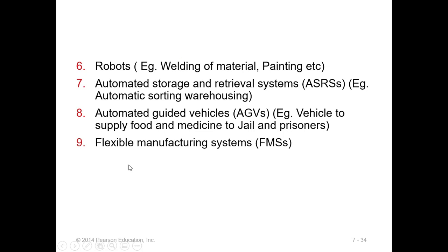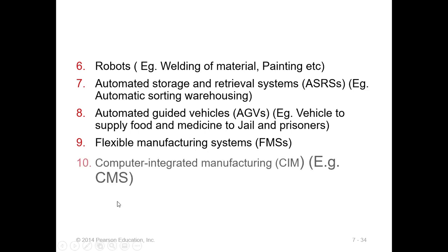Flexible Manufacturing Systems (FMS) provide flexibility in the overall production plant, helping to customize the product. Computer Integrated Manufacturing (CIM) — like a campus management system — integrates the entire process from order to the final customer. When the whole process is computer-based, the entire plant operates with the help of integrated information. A classic example is provided in the book.